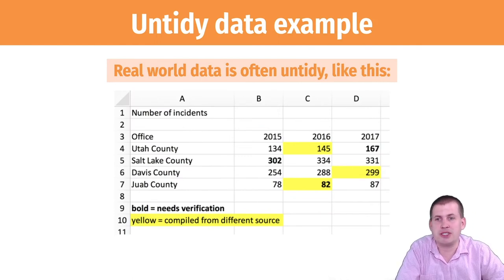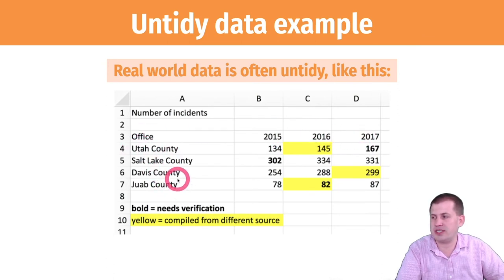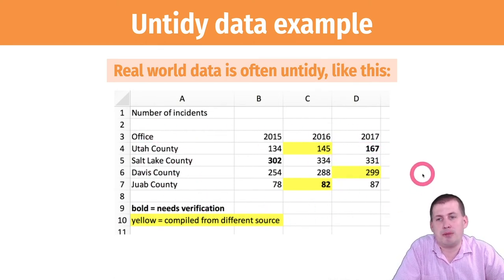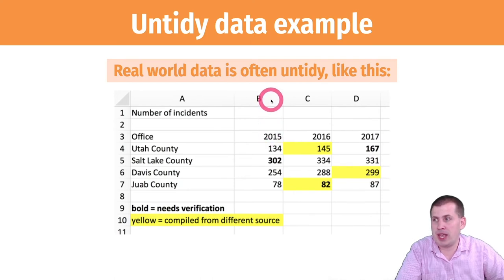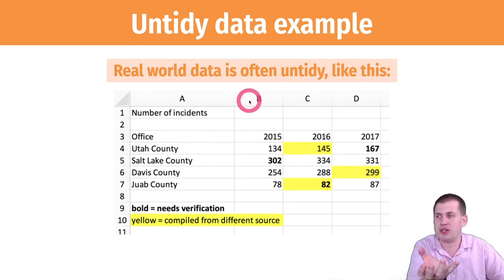Untidy data is something you see in the real world all the time. For example, if you have an incident report for different offices, you might have a column for each year — 2015, 2016, 2017 — and rows for the different offices. You might also add extra information like highlighting to indicate a different source, or bold text to flag entries needing verification. This is a very typical Excel sheet, but it's not tidy because variables like year, number of incidents, and verification status are spread throughout the data rather than in their own columns, and this kind of data will not work in ggplot.